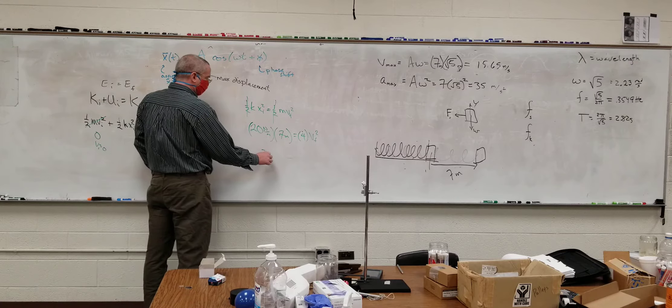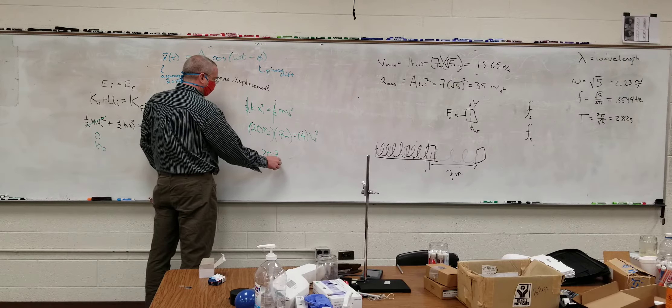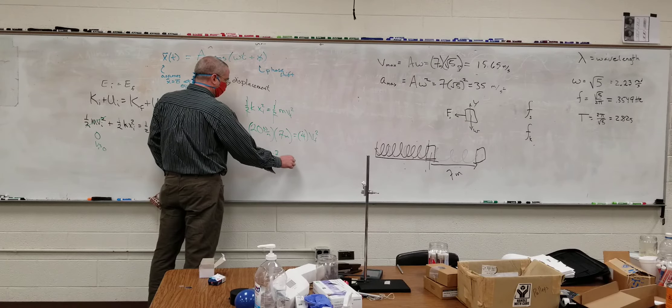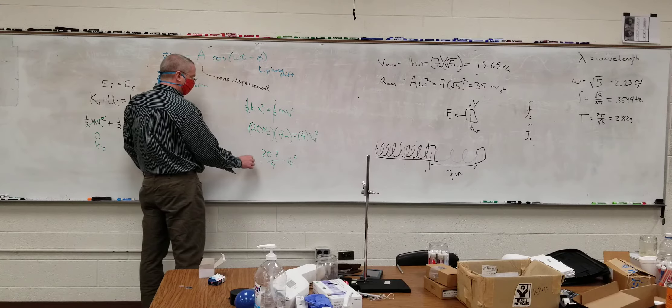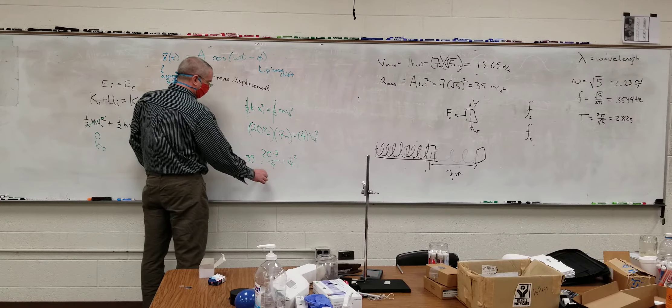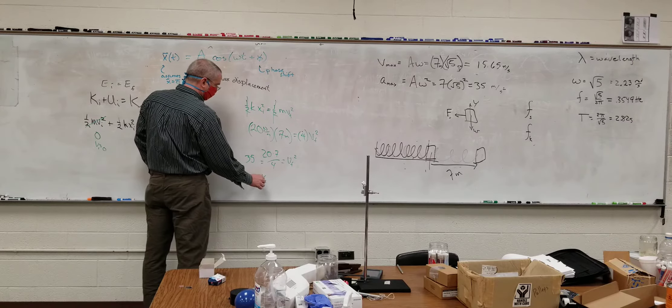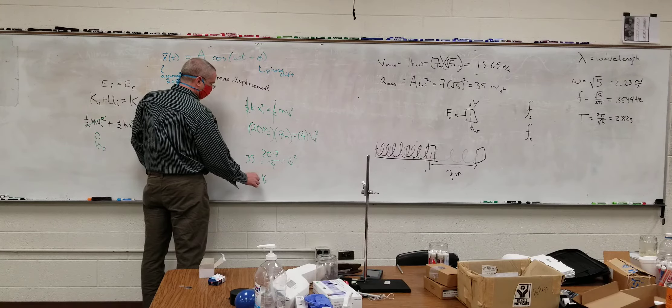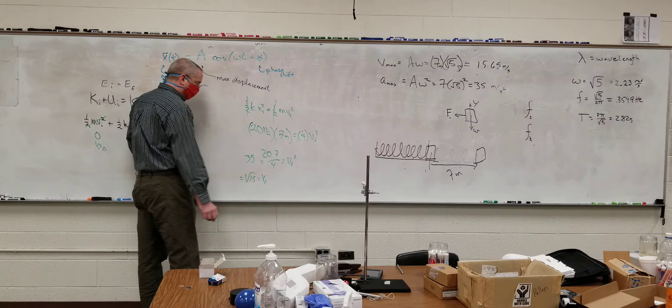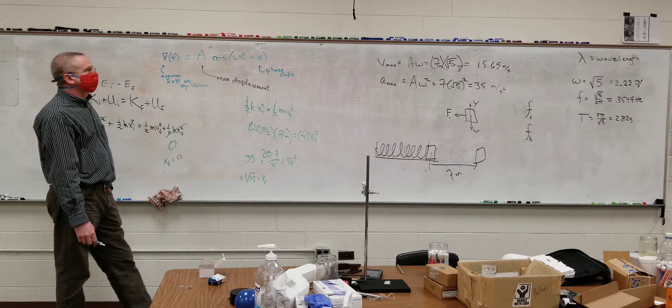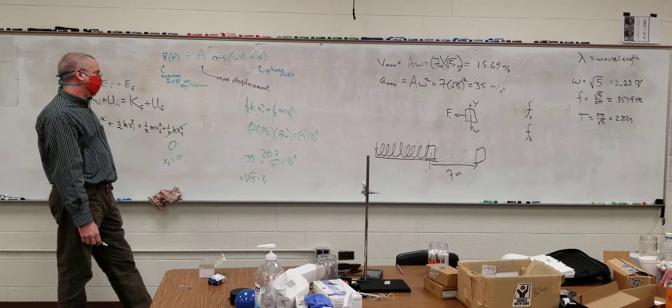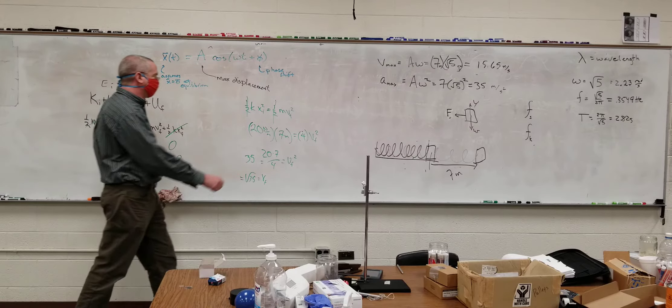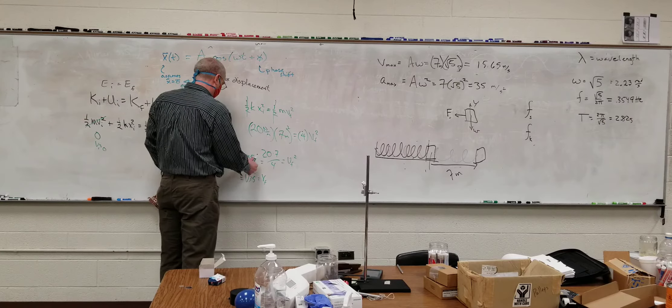So we get 20 times 7 over 4 is equal to vf squared. That's 35. So vf is the square root of 35. Something went off. Oh, that's 7 squared.